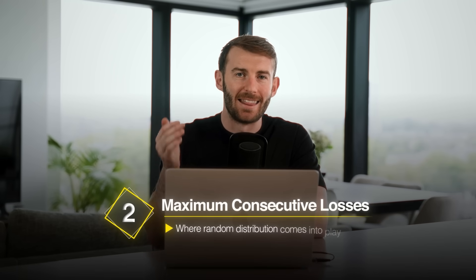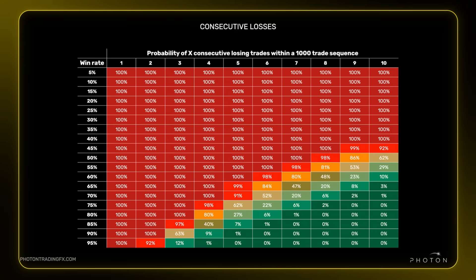But then I had to run the math, and this is the second calculation: your maximum consecutive losses, where random distribution comes in. This table shows the probability of losing a certain number of trades in a row within a thousand trade sequence depending on your win rate. If you have a 40% win rate — a realistic rate for most retail trading strategies — you have a mathematical certainty of experiencing 10 consecutive losing trades at some point within a large trade sequence.